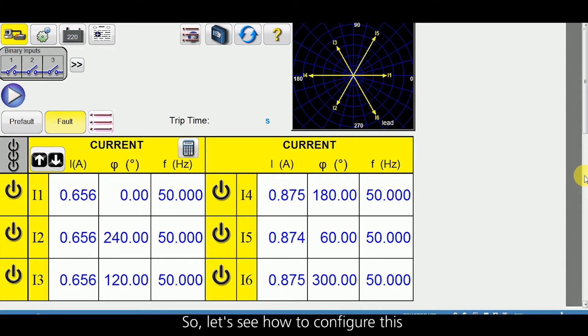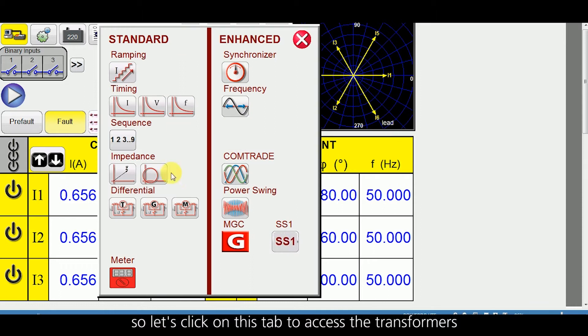So let us see how to configure this. This is the advanced menu tab. Click on this tab to access the transformer differential function, the automated feature.